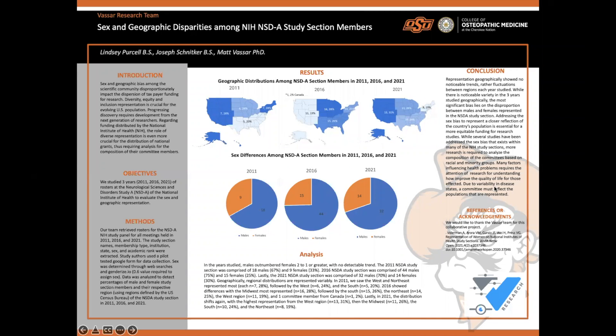To give you a quick introduction as to what we're studying: sex and geographic bias have been a long standing issue with a disproportionate dispersion of taxpayer funding for scientific research, specifically distributed by the National Institute of Health. It's crucial, with a drastically changing population, that we have committee members among these national institutions that disperse taxpayer dollars to be representative of the populations within our country.